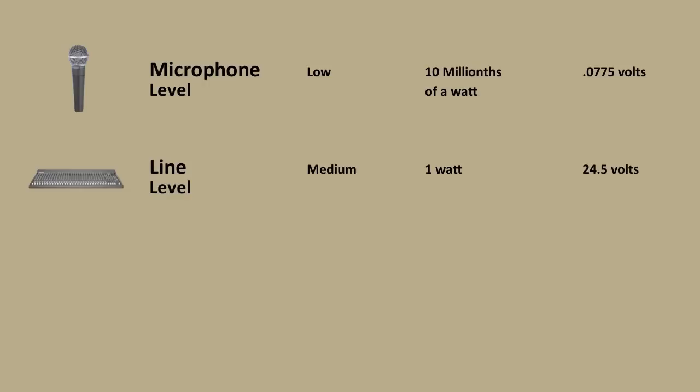The next type is line level. This is a little bit louder, a little bit stronger of a signal than microphone. Its range is about negative 20 dBU all the way up to plus 30 dBU — that's just a general ballpark of how strong the signal will be. It's in the ballpark of 1 watt or 24.5 volts. Examples of devices that output line level signals are keyboards, synthesizers, mixing consoles, and processing gear — your reverbs, compressors, limiters — any type of audio gear will be at line level. There are different flavors of line level.